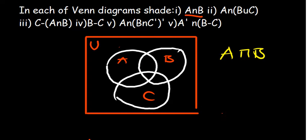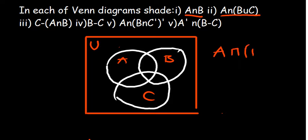Moving on to the second part of the question, it is requiring us to shade A intersection B union C. So whenever I'm simplifying a set, the simplest way of approaching it is by starting with what's in the brackets. If you look at what's in the brackets, we are trying to combine B together with C. So I'll shade the entire region of B union C.